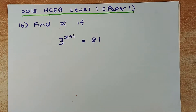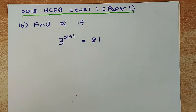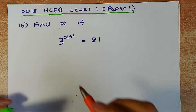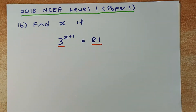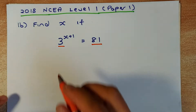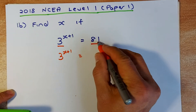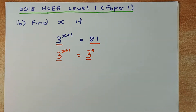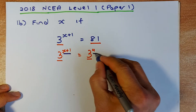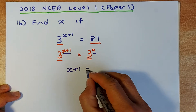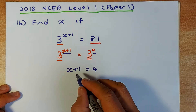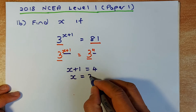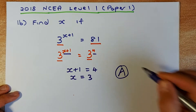The first exam question is from the 2018 NCEA Level 1 paper 1, where you solve for X in 3 to the power of (X plus 1) equals 81. You need to make the base the same — 81 is 3 to the power of 4 (3 times 3 times 3 times 3 equals 81). With the same base, X plus 1 equals 4. Solving algebraically, minus 1 on both sides gives X equals 3. That achieves a Level 1 grade.